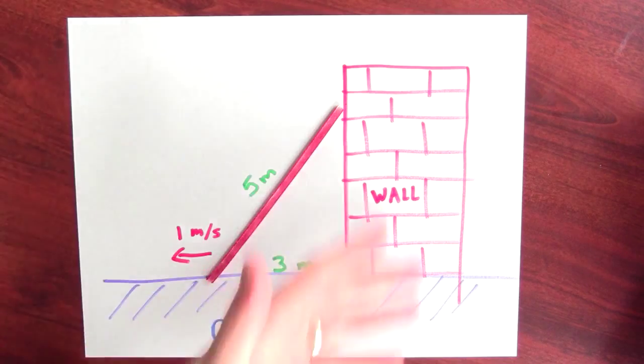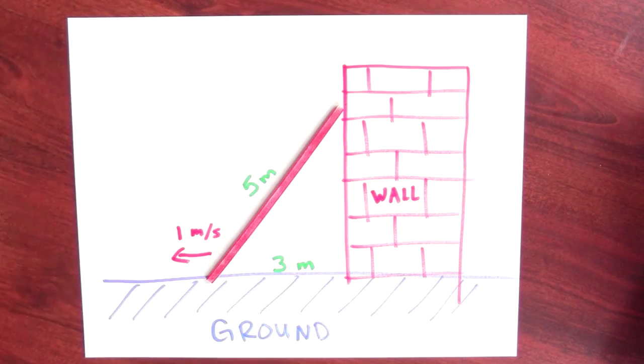So remember, we've got this four step process. The first step is to draw a picture. Of course, I think this is already a pretty good picture. The second step is to write down an equation. So I'm going to label everything in my diagram and then figure out what the equation is.